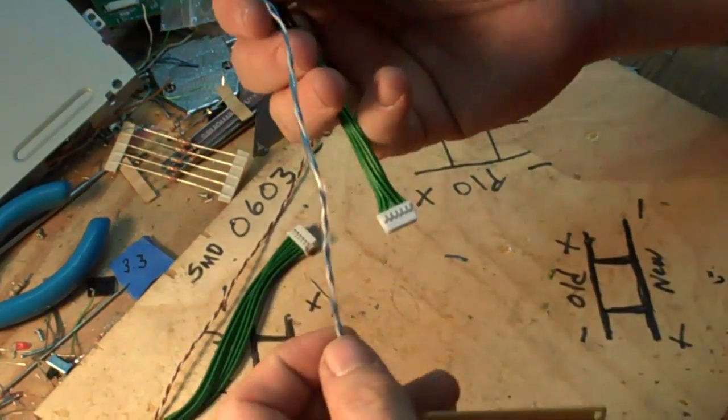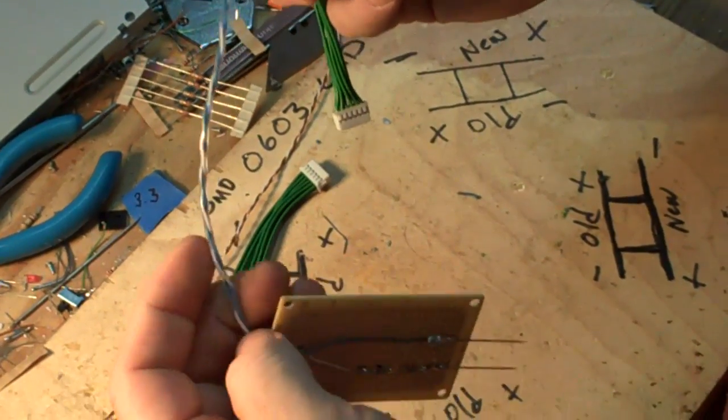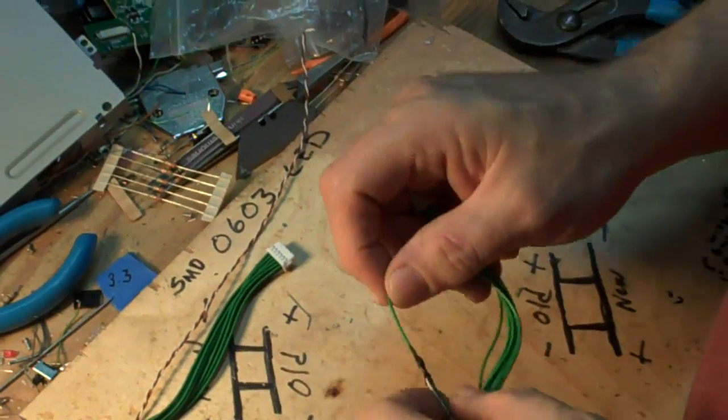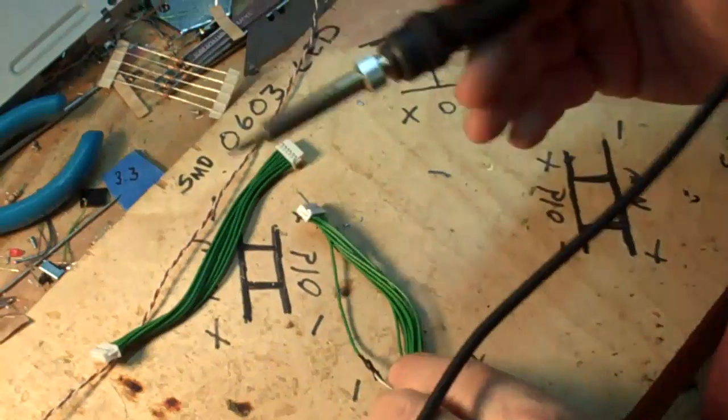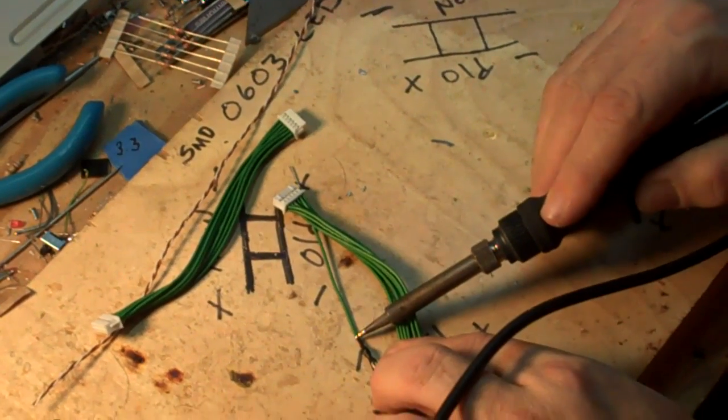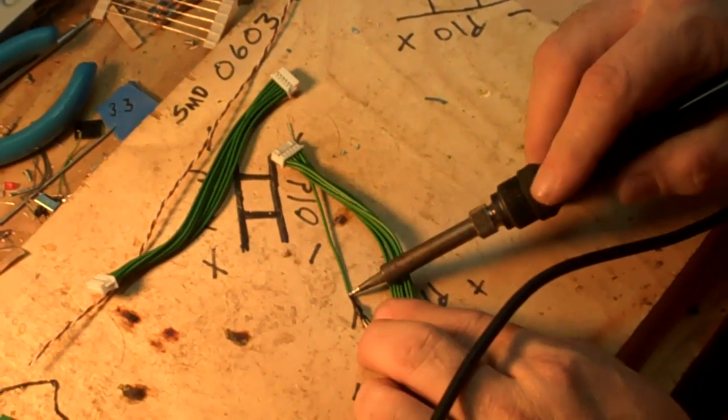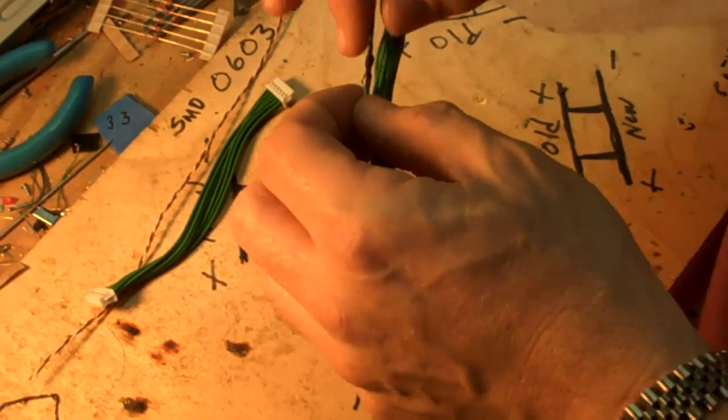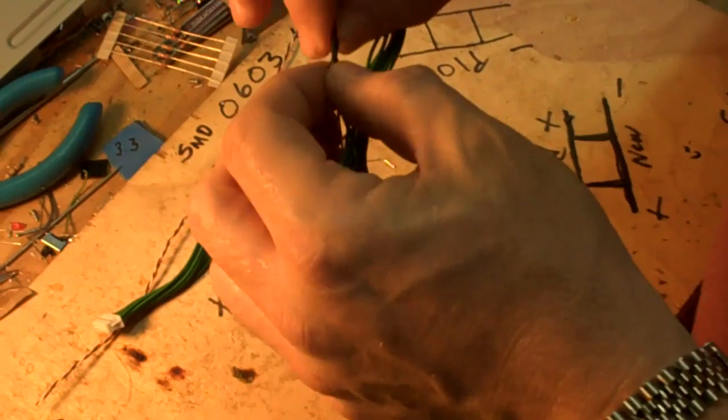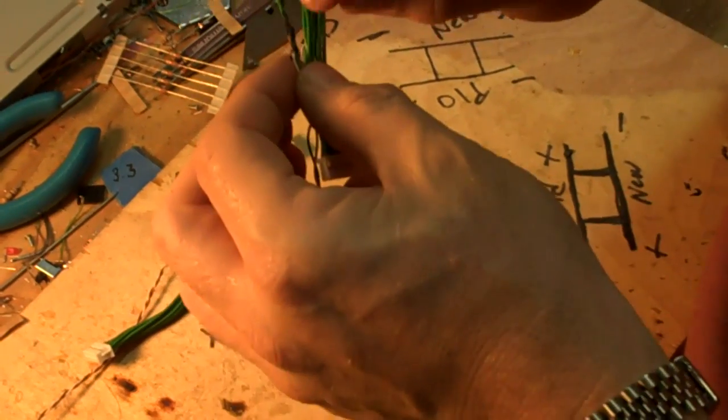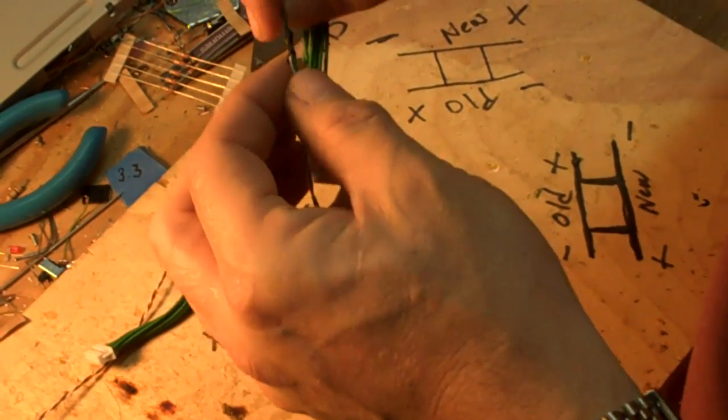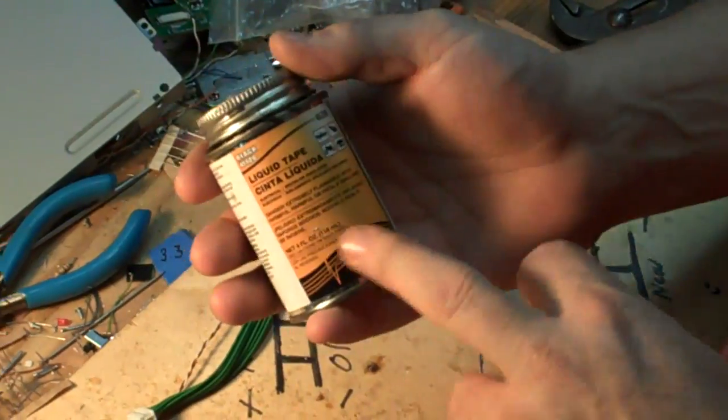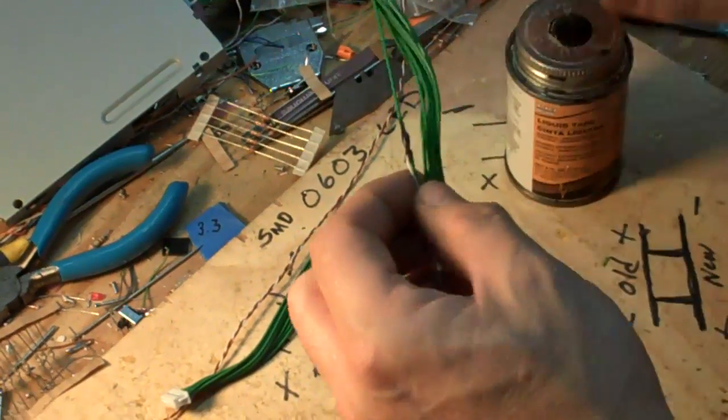Just wired those up. I put a piece of heat shrink tubing for a cleaner look. I used my soldering iron and just pushed down with it while it was heated and melted back the plastic. I cleaned that up. I took my solid core wire and wrapped it around the stranded wire and soldered in place. Then I used some liquid electrical tape to cover them up.